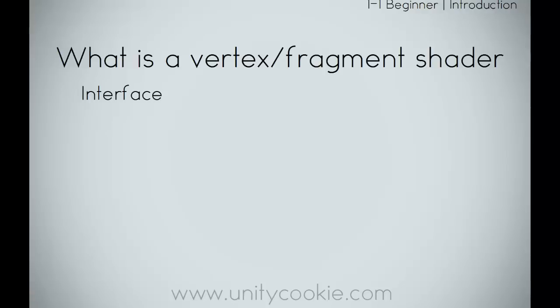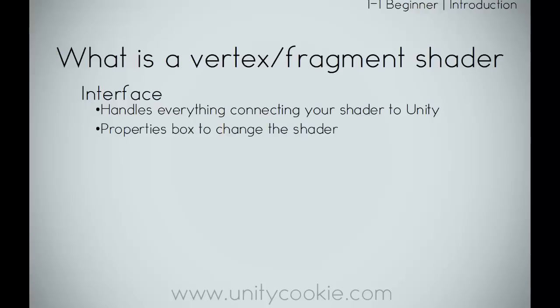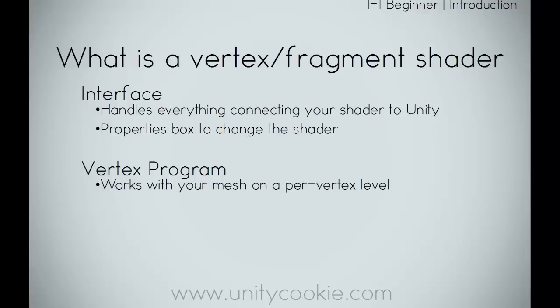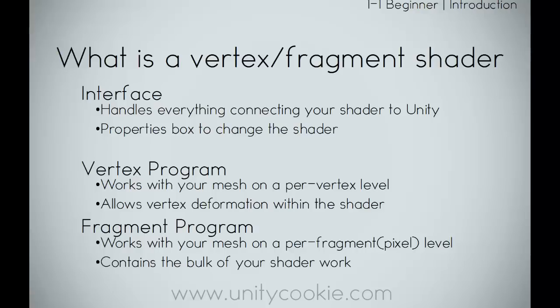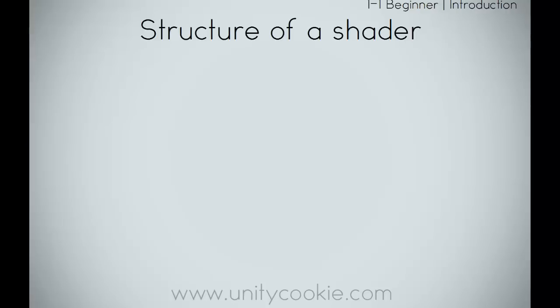So what is a vertex and fragment shader? We split it into three separate parts. The interface handles everything connecting your shader to Unity, with a properties box to change the shader — colour pickers, sliders, and such. Then we have the vertex program, which works with your mesh on a per-vertex level, allowing vertex deformation within the shader. And we have the fragment program, which works with your mesh on a per-fragment, or per-pixel, level — fragment is often referred to as a pixel — and this contains the bulk of your shader work.